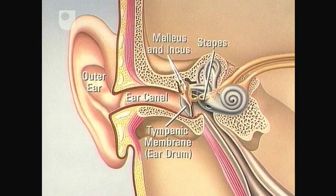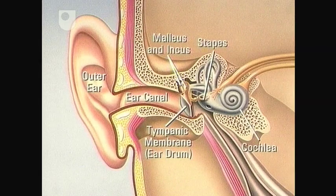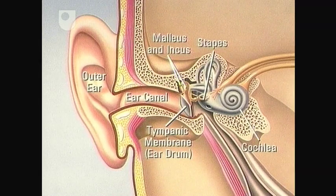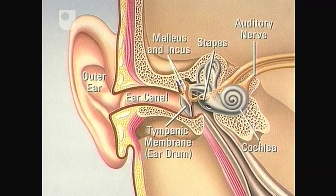These three bones in turn vibrate the cochlea, where they're converted to nerve impulses, which then travel along the auditory nerve to the brain.